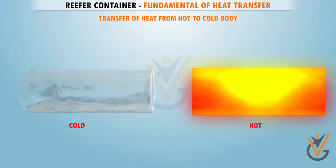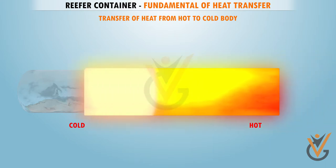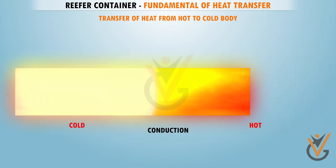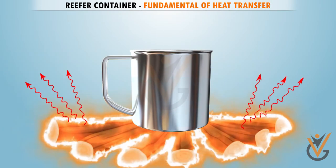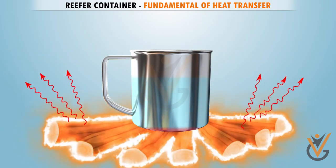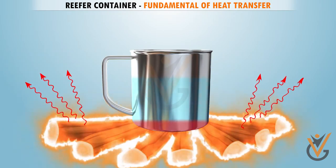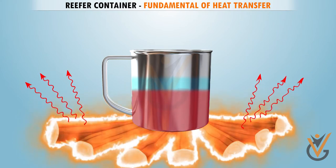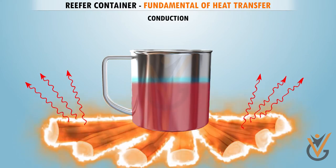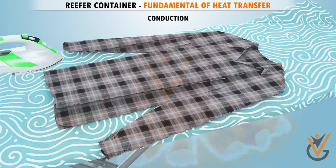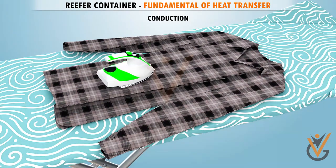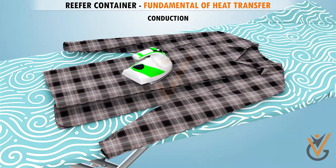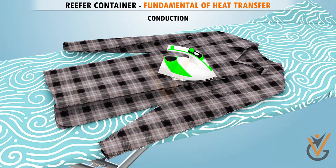When heat from one object gets transferred to another object by direct contact, it is known as conduction. For example, when we make tea, heat from the stove gets transferred to the steel pan because of direct contact, and thus this is conduction. When you iron your clothes, heat energy gets conducted from the iron to the clothes.